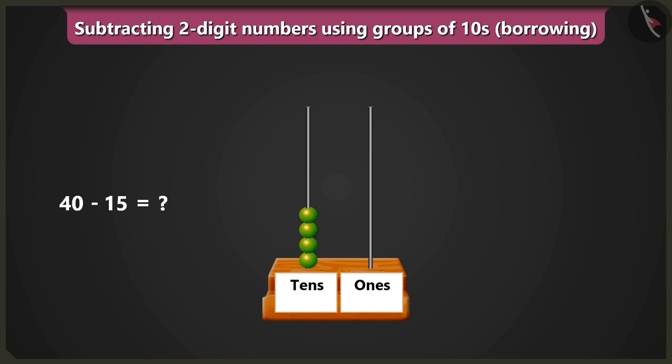Now we have to subtract one tens and five ones from these. But there are no beads in the box of ones. So how will we subtract fifteen from forty?